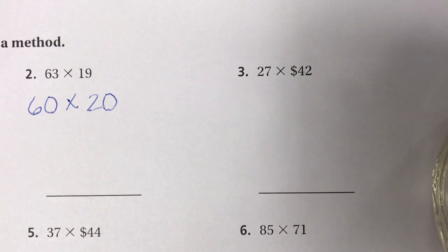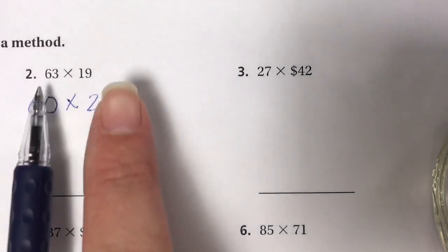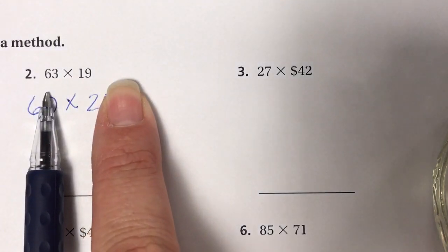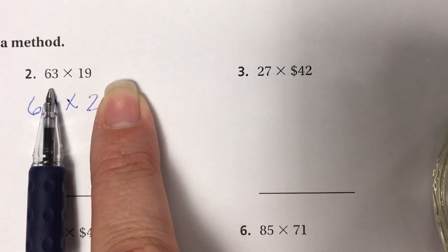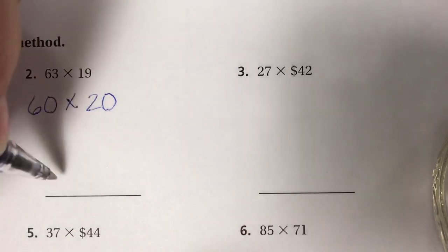Solving this is fairly simple mental math. We just cover up the zeros and use our base fact: 6 times 2. 6 times 2 is 12.